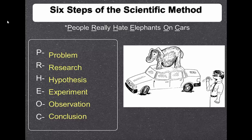So, those are our steps of the scientific method. Go ahead and write them down. Problem. Oh, yeah. Research. Hypothesis. Experiment. Observation. Conclusion. Those are the steps of the scientific method. And like I said, you are going to have to remember them. If you remember the sentence, you could remember the steps.